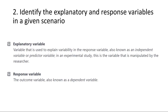An explanatory variable is a variable that is used to explain variability in the response variable, also known as an independent variable or predictor variable. In an experimental study, this is the variable that is manipulated by the researcher. A response variable is the outcome variable, also known as the dependent variable. Let's look at a few examples.